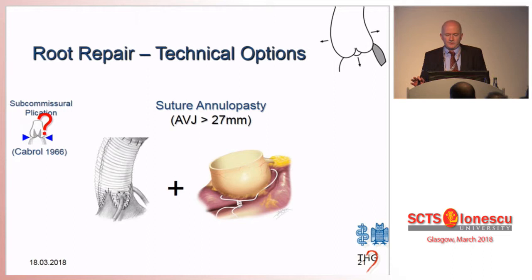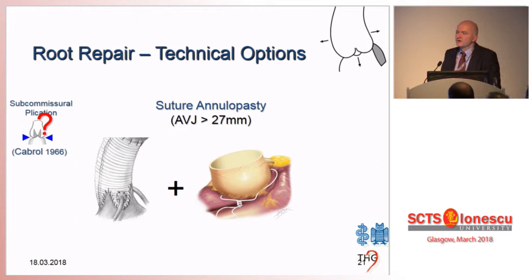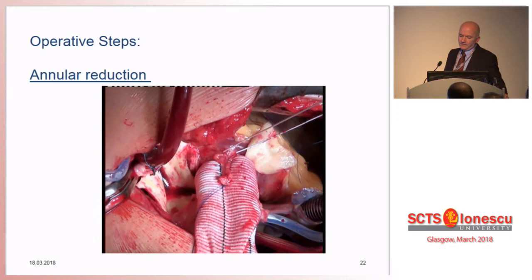It may be arguable — and we could discuss this for half an hour — do we need an annuloplasty? This is something we can discuss after the debate. In order to accommodate all instances, including those where there is muscle inside the sinus, or the basal ring is lower than the aorto-ventricular junction, I decided nine years ago — because I was not comfortable with an external ring — to use the concept of suture annuloplasty with a PTFE suture.